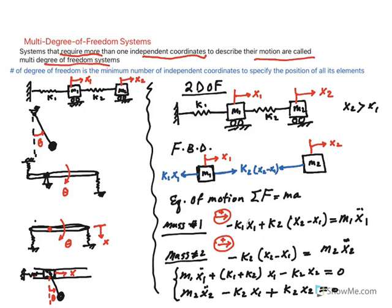If they need two coordinates, that would be two degree of freedom, and usually we write it as 2 DOF, which means degree of freedom. If they need three, then that would be three degree of freedom. The number of degree of freedom is the minimum number of independent coordinates to specify the position of all its elements.